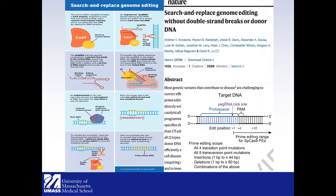More recently, the same group developed another variant called prime editing. This system does not require a double-stranded break or donor DNA and has a wider range of corrections possible — they claim about 89% of human diseases can be corrected using this approach. The components include a Cas9 nickase with a reverse transcriptase attached, and a pegRNA (prime editing guide RNA) that guides Cas9 to the target location.